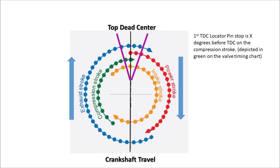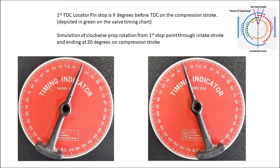Now let's add top dead center pin stop points into the theory. The first top dead center pin stop is X degrees before top dead center on the compression stroke, depicted in green on the valve timing chart. The simulation shows clockwise prop rotation from the first stop point through the intake stroke, depicted in yellow, ending at X degrees on the compression stroke, again depicted in green. Transcribing that to the E25 timing indicator: clockwise prop rotation from the first stop point starting at 20 degrees after top dead center through the intake stroke, ending at 20 degrees before top dead center on the compression stroke.